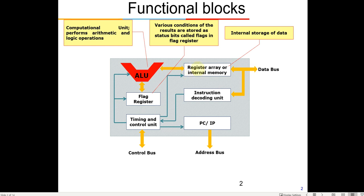Another thing to remember about the flag register is that whenever we do a move operation — moving contents of register A to register B or something like that — the flag register status is not updated. It is only updated when an arithmetic or logical operation is done, like multiplication, division, or a logical AND of two data values. It does not get affected by move operations.